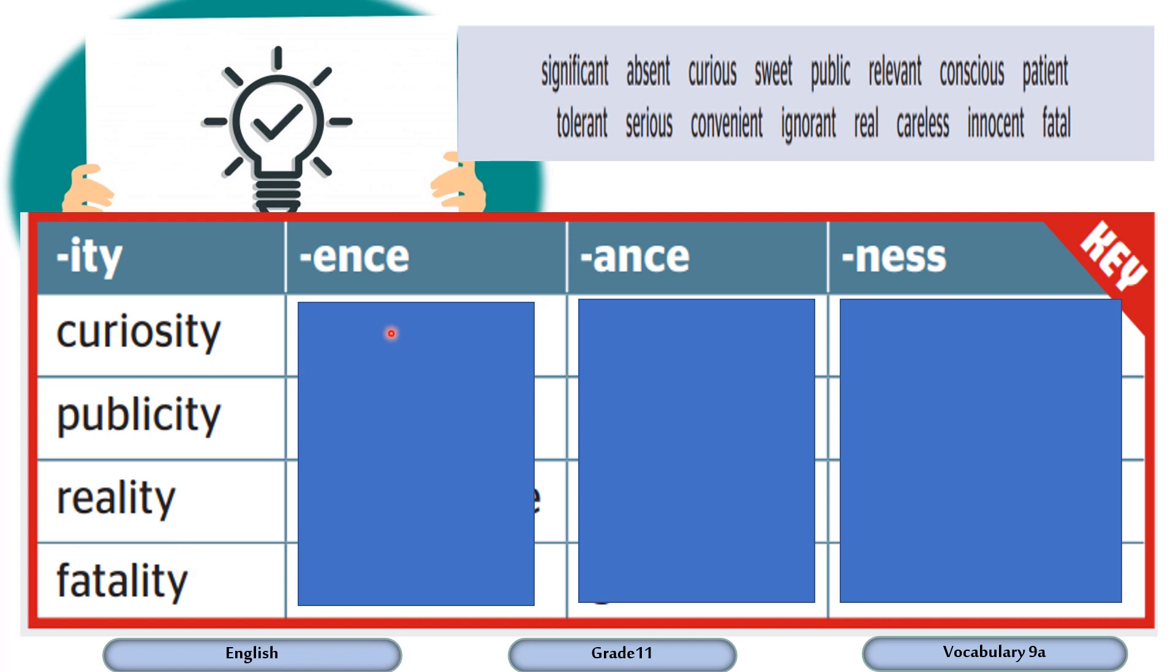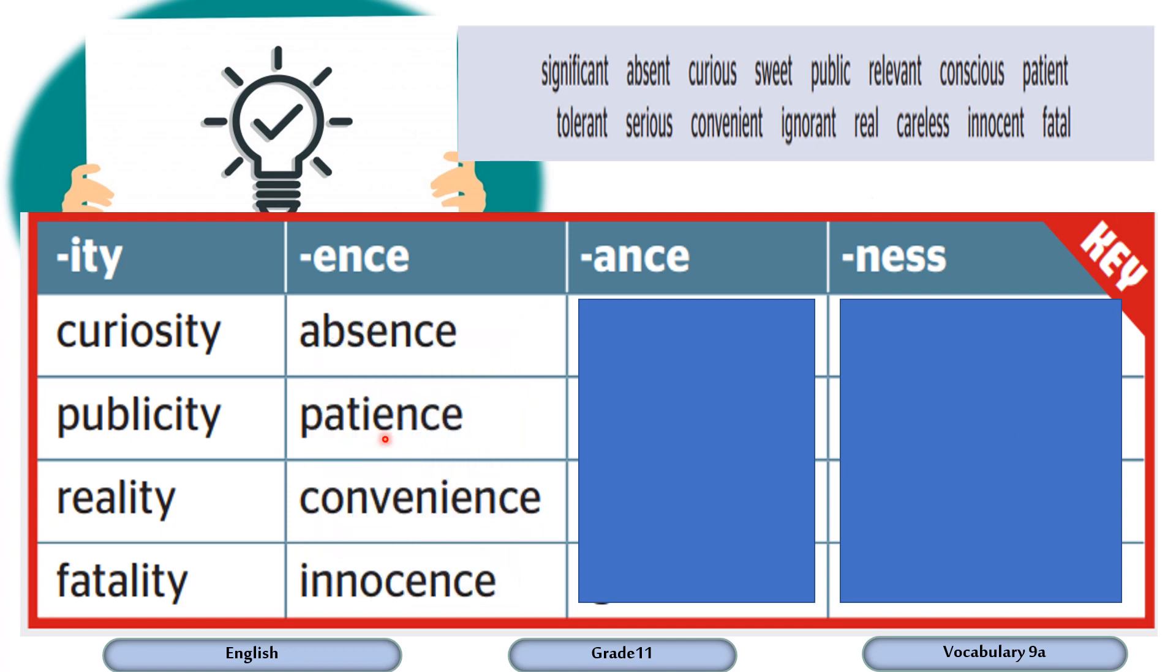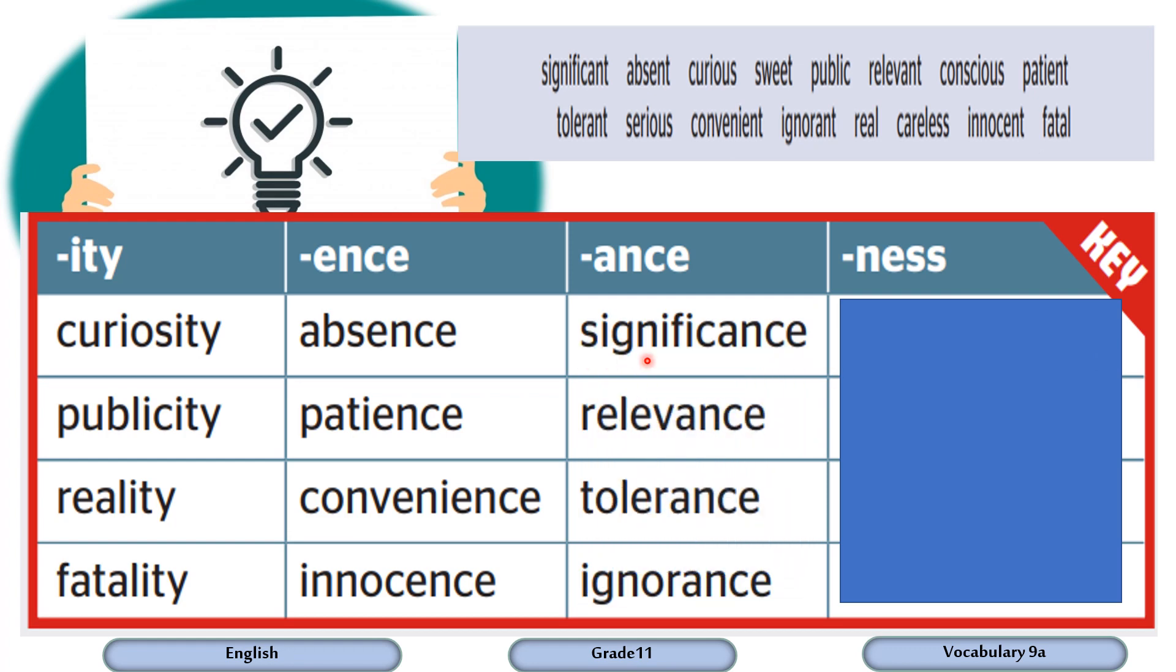Now move on to the next suffix, ANCE. Absence, patience, convenience, and innocence. As you can see here, the adjectives turned into nouns. A-N-C-E, significance, relevance, tolerance, ignorance.